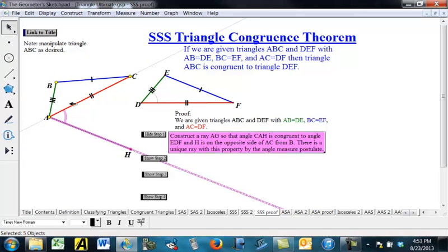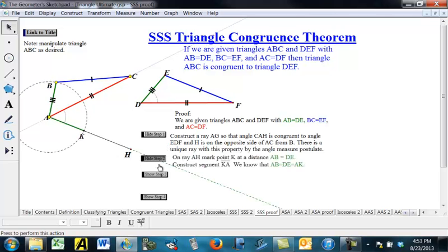And H needs to be on the opposite side of this line AC from B, so it's down here. Now, we know there's a postulate that says that, angle measure postulate says we can do such a thing.